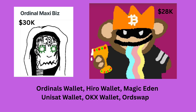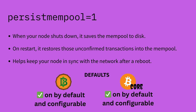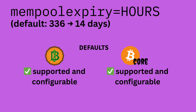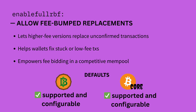Here are a few examples of what these NFTs or ordinals look like, and here are a few of the projects that are using these. Persist mempool tells your node to save the mempool when it shuts down — when you restart, it reloads those unconfirmed transactions so your node stays in sync with the network without starting from scratch. Mempool expiration sets how long your node keeps an unconfirmed transaction; if it hasn't confirmed after this amount of time, your node will drop it.